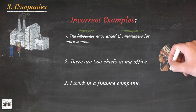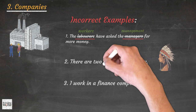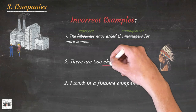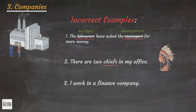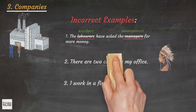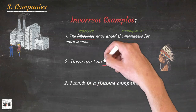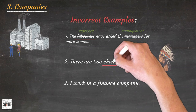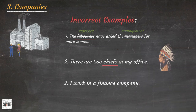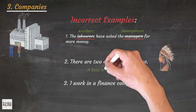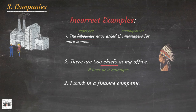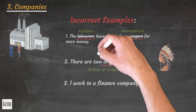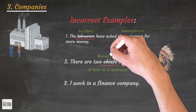You can have a chief executive or chief accountant, but the word 'chief' is usually referred to the leader of a tribe of Native Americans. At work, you have a boss or a manager. For example: There are two bosses, or there are two managers in my office.